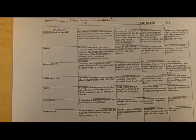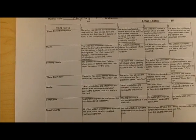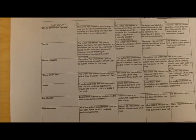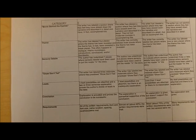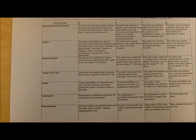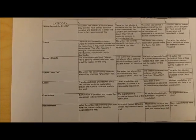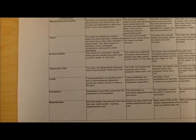Then make sure to go down that left-hand column where it says 5 and make sure you have done what it asks you to do. For instance, in Movie Behind the Eyelids, it asks you to label a section where you have shown Movie Behind the Eyelids. In Theme, it asks you to label 4 places where the theme has been revealed.